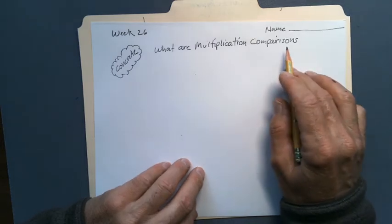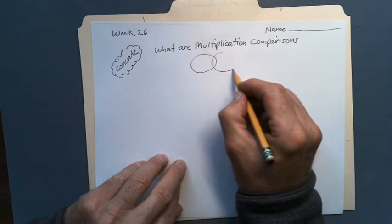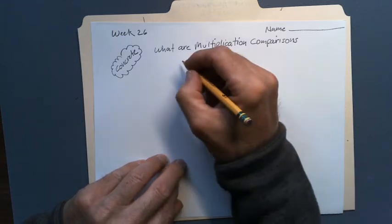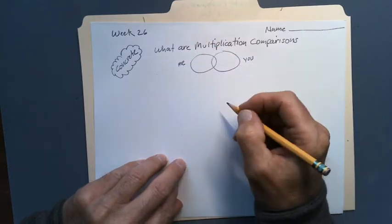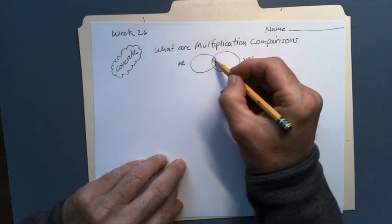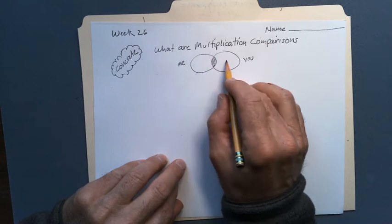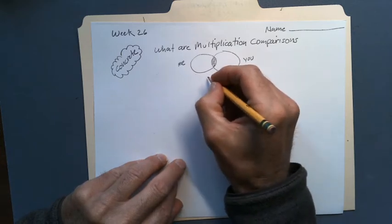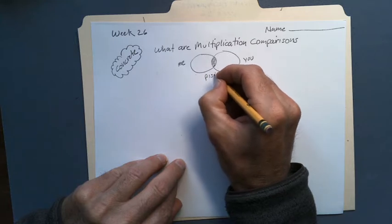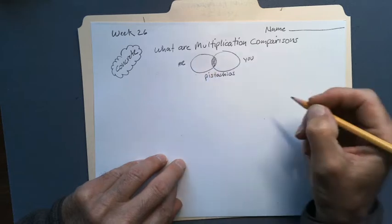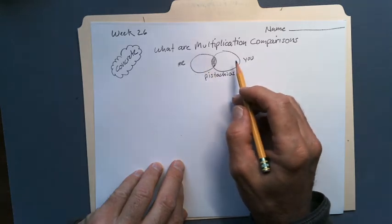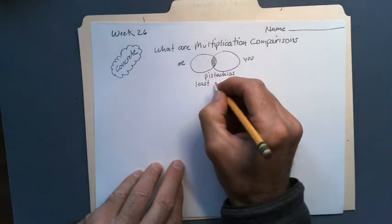Whenever we look at comparisons in English, language, or reading, we sometimes use a Venn diagram. We can use this for math also. This circle is going to represent me and this one is going to represent you, and this is going to be the unit — whatever we happen to be talking about. In math the numbers are going to be different, but the units are usually the same. So I'm going to use pistachios as our unit. The circle over here is going to have less — the number is going to be smaller — and it's always going to go from least to greatest.